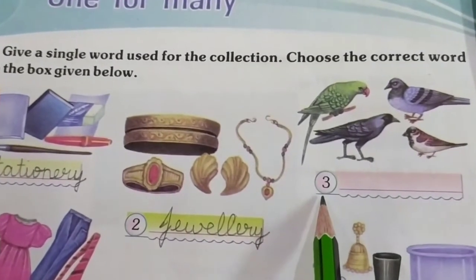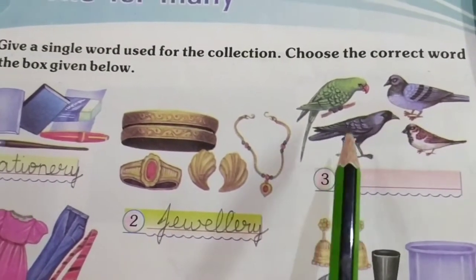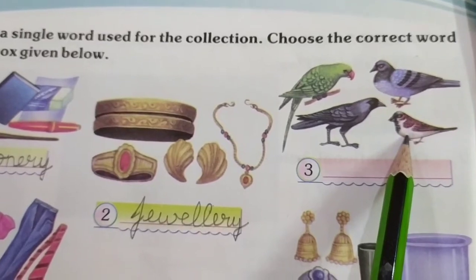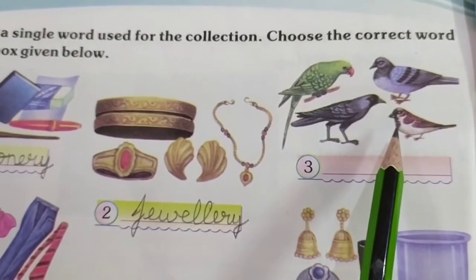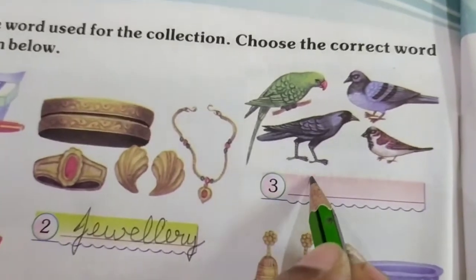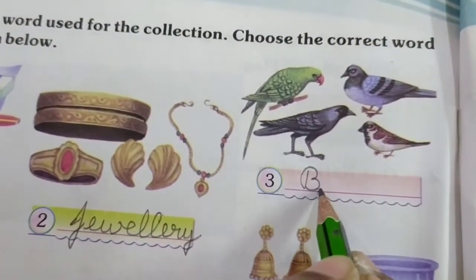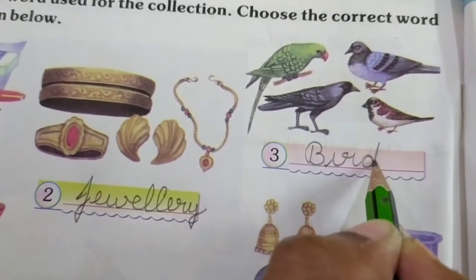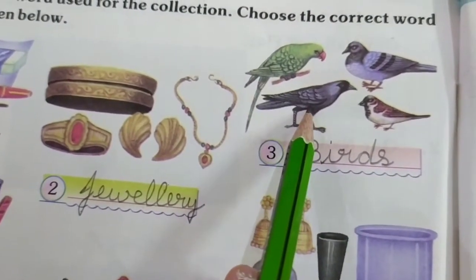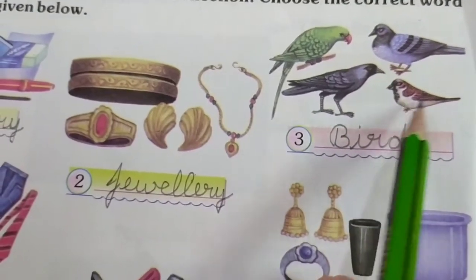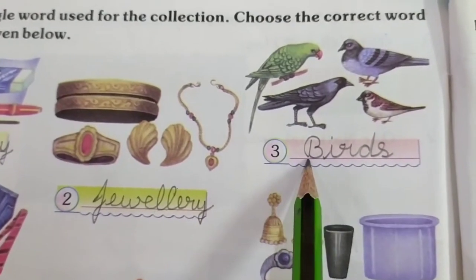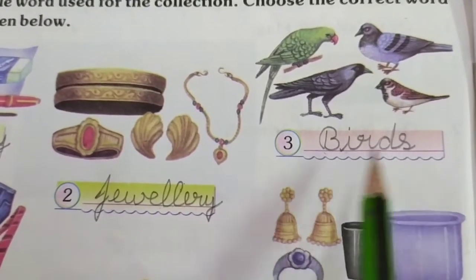Now we will move on to the third question. There is a parrot, crow, pigeon, and sparrow. There is a single word for all those things — we call them as birds. B-I-R-D-S. Birds.